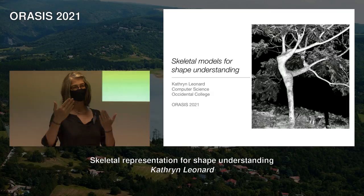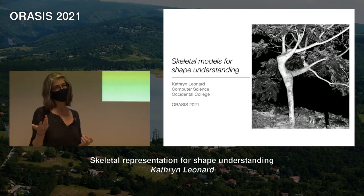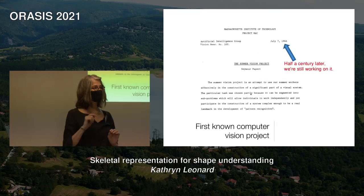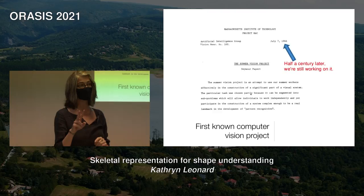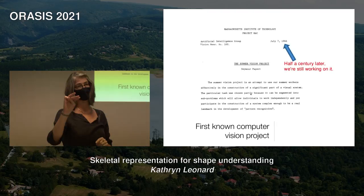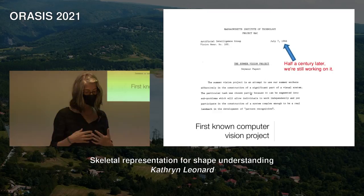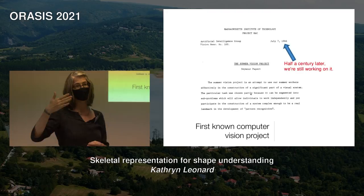Most of you know this, but it's easy to forget: the first known computer vision problem is from 1966. It was proposed as a summer research project with two undergraduate students and one professor. So in three months, three people were going to completely solve computer vision. One of the reasons that failed is that we completely underestimated how powerful our own visual systems are.